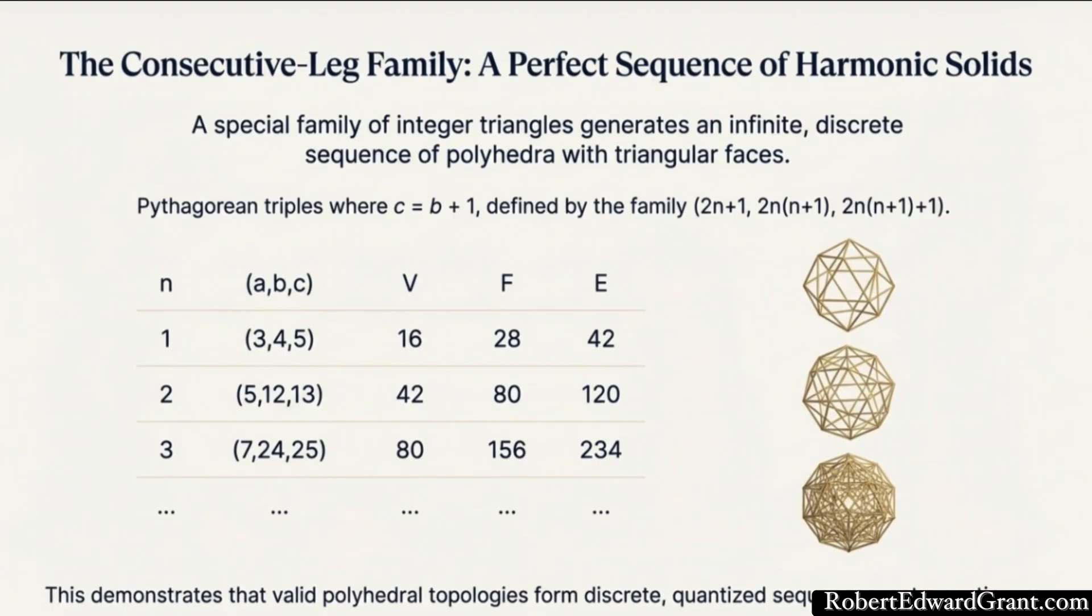Every single one of them. They are the perfect family to test this claim of quantized geometry. The vertex counts for this family are perfectly quantized. They form a discrete sequence. Let's run through the first few. The smallest one is that familiar 3, 4, 5 generator. We plug those values into our formula: V equals 3 plus 2 times 4 plus 5. That's 3 plus 8 plus 5, which is 16. So the 3, 4, 5 triangle generates a shape with exactly 16 vertices. Not 15, not 17, 16. The next one in the sequence is the 5, 12, 13 triple.